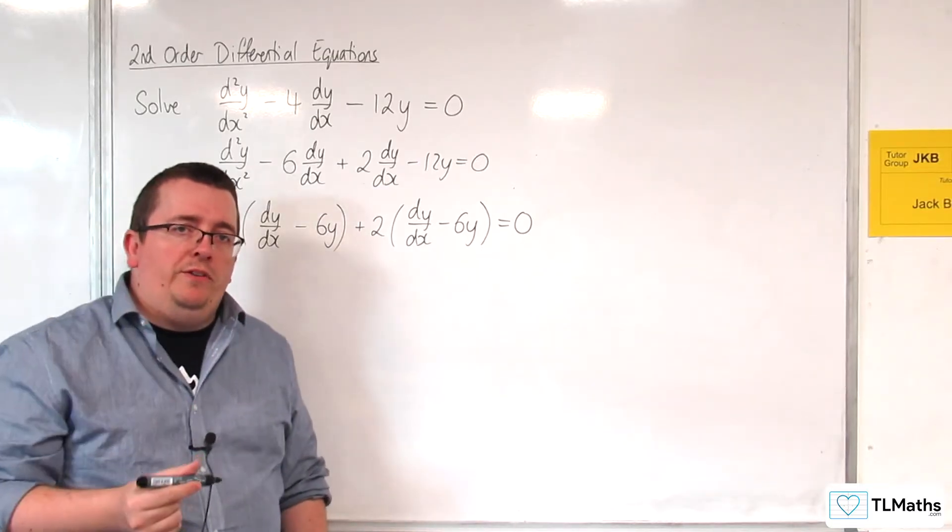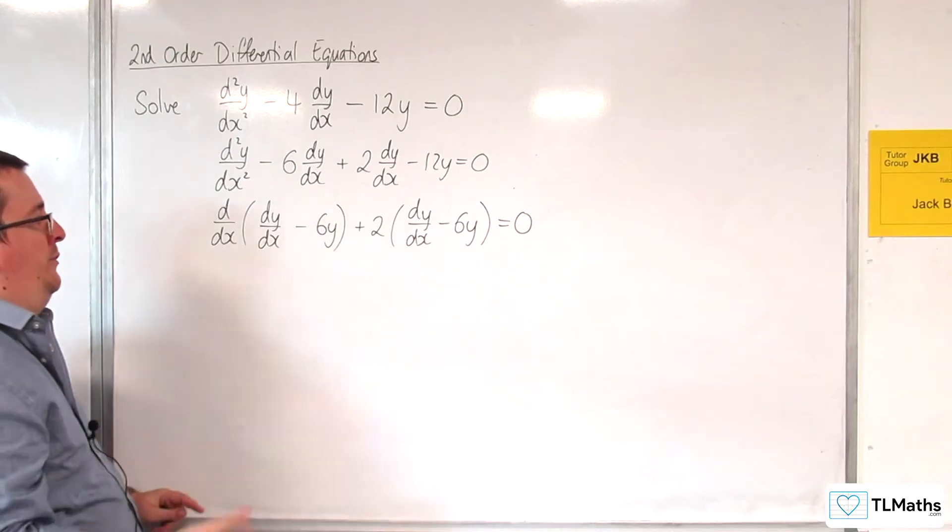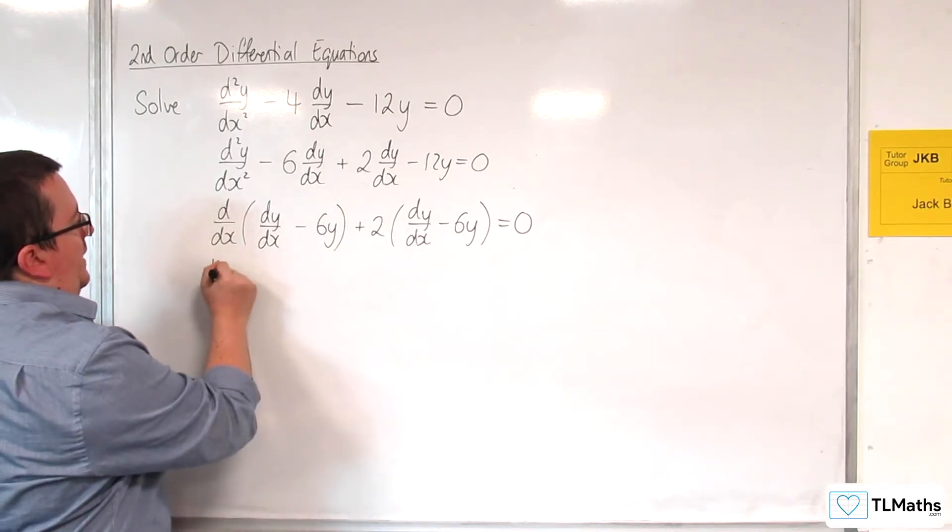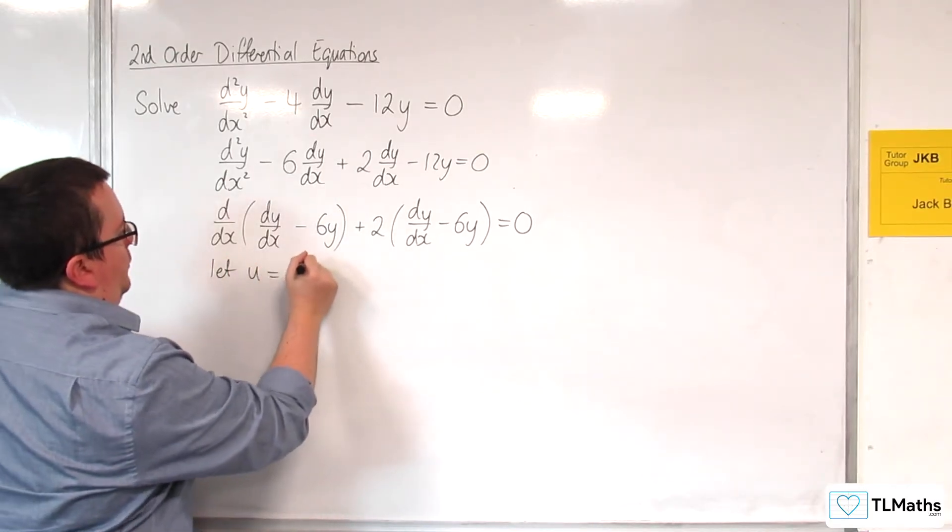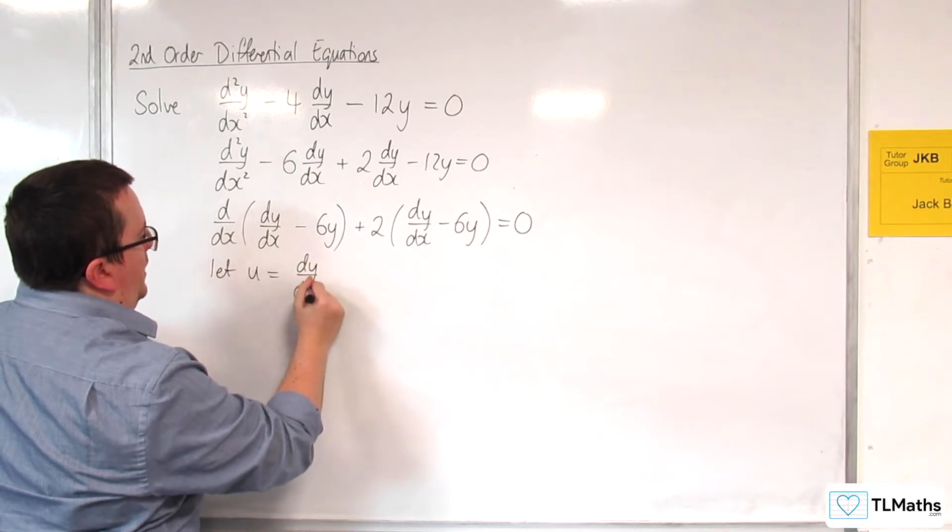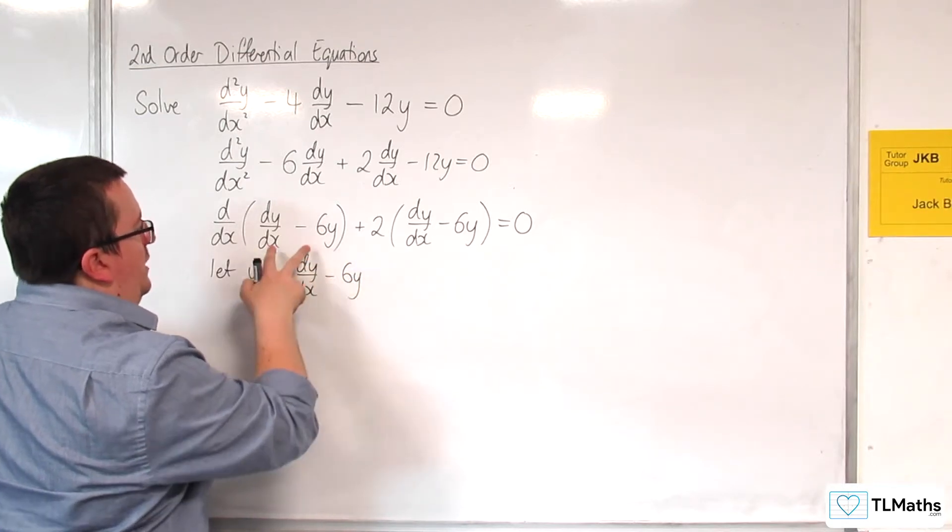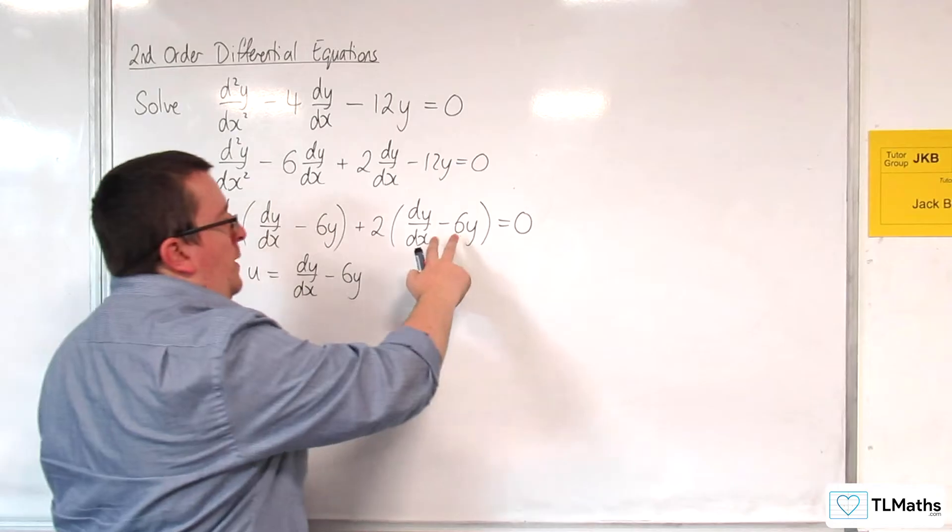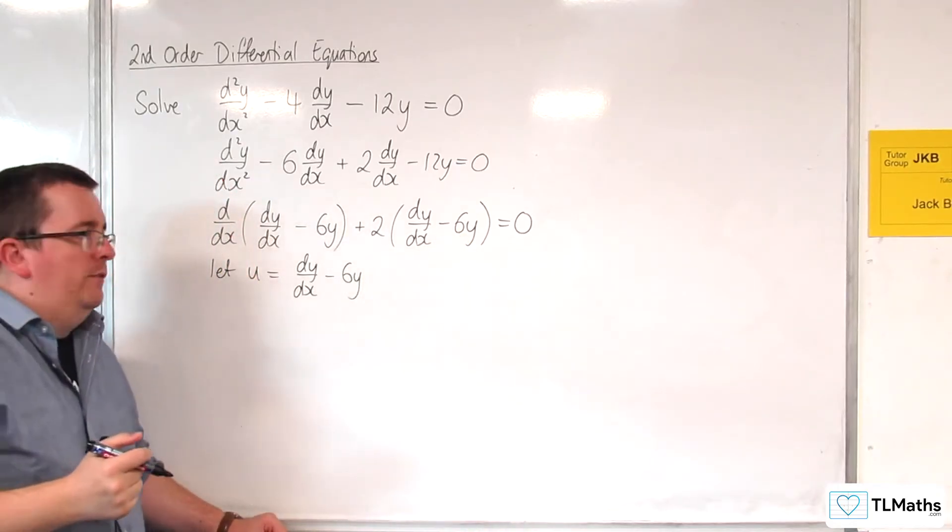Now, what I'm going to do is use a substitution. So I'm going to let u be equal to dy/dx - 6y. So I'm using a substitution to substitute in those two pieces of the puzzle.